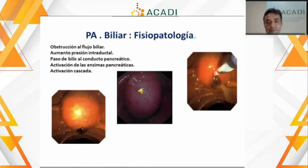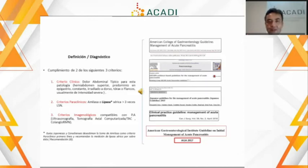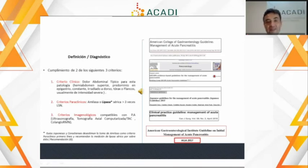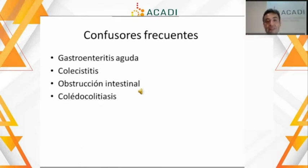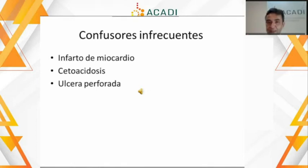El diagnóstico se basa en la presencia de un dolor pancreático; la sensibilidad del dolor pancreático clásico no es muy alta, está alrededor del 60%, por eso se requiere el apoyo de las pruebas serológicas o de imágenes para confirmar el diagnóstico. El dolor debe ser en abdomen superior, de instalación rápida y muy severo, y en el 90% de las veces acompañado de náusea o vómito. Los confusores frecuentes incluyen la gastroenteritis, colecistitis, coledocolitiasis u obstrucción intestinal.